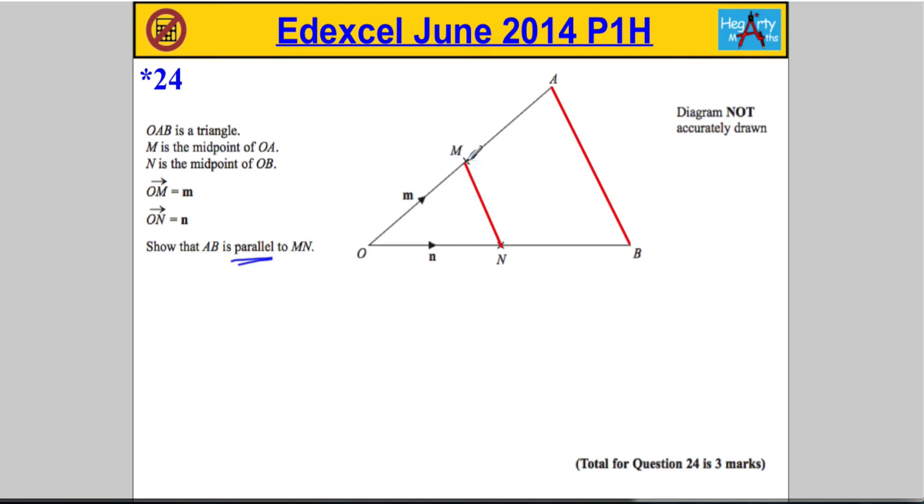So let's first and foremost work out what the vector is from M to N. So to get from M to N, I'm going to have to go backwards along this vector and then forwards along here. So if I travel in that direction, I'm travelling in minus m, and then from here to here is positive n.